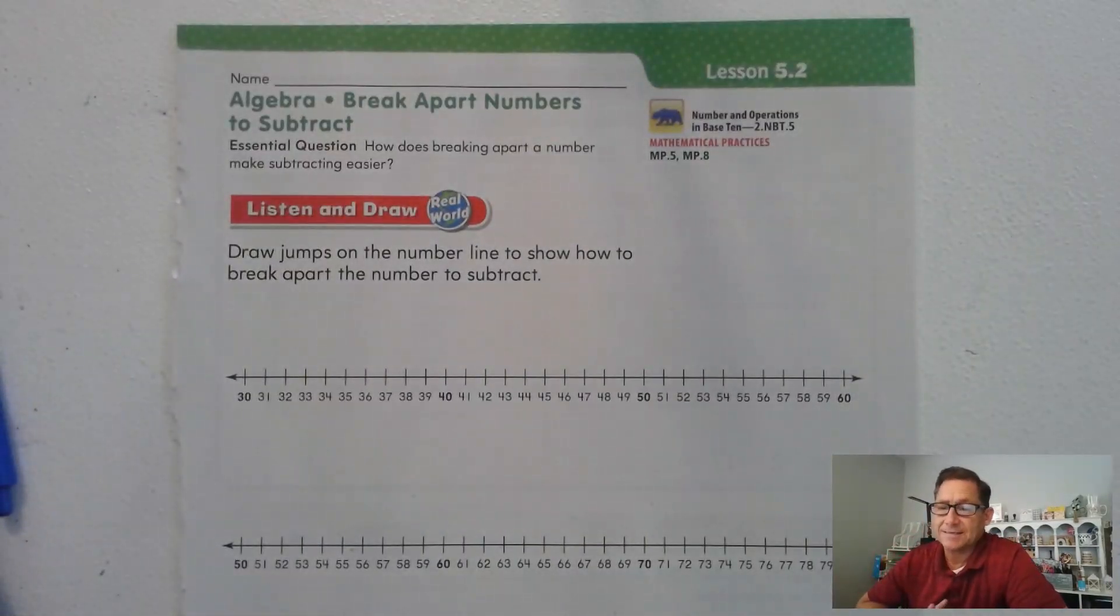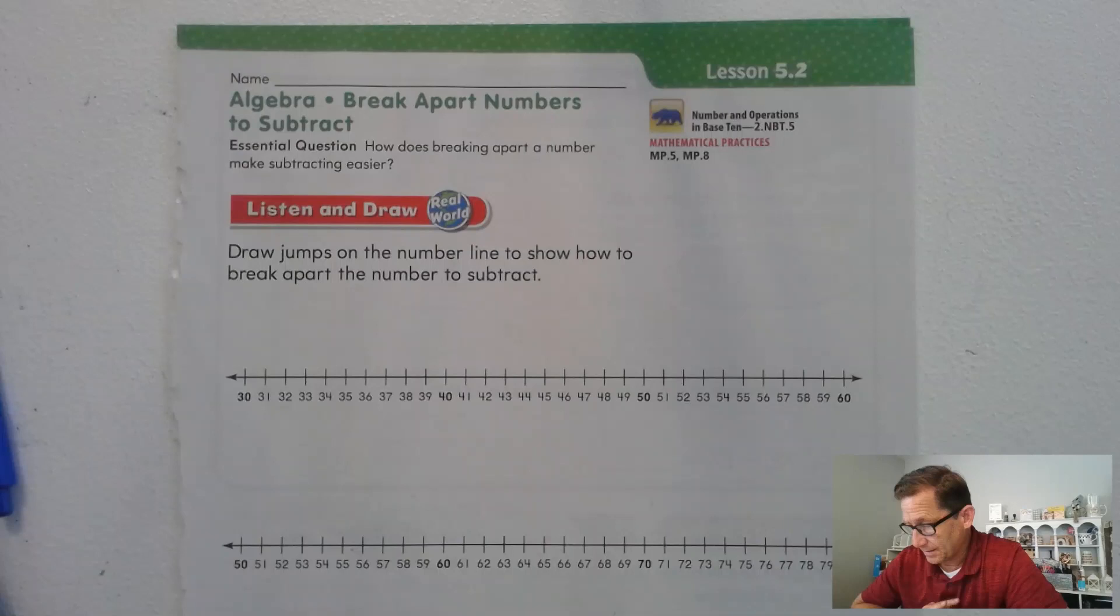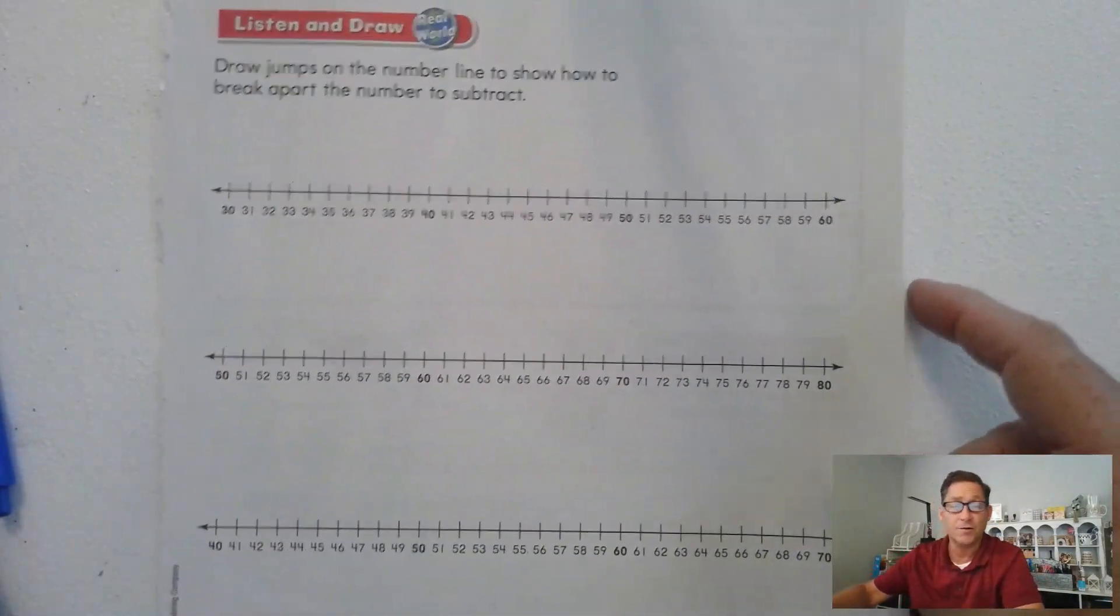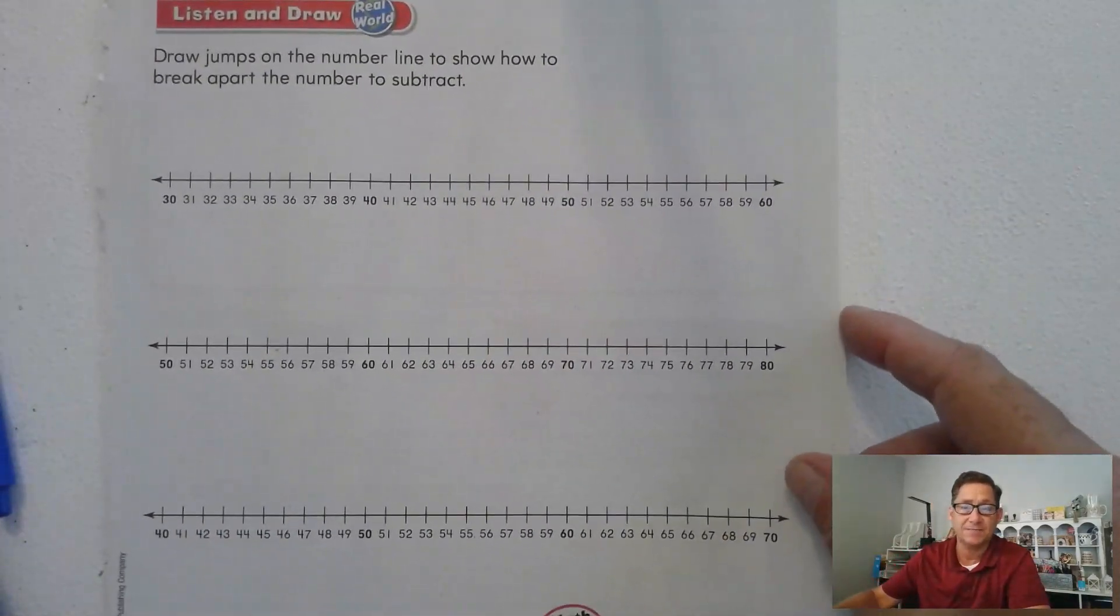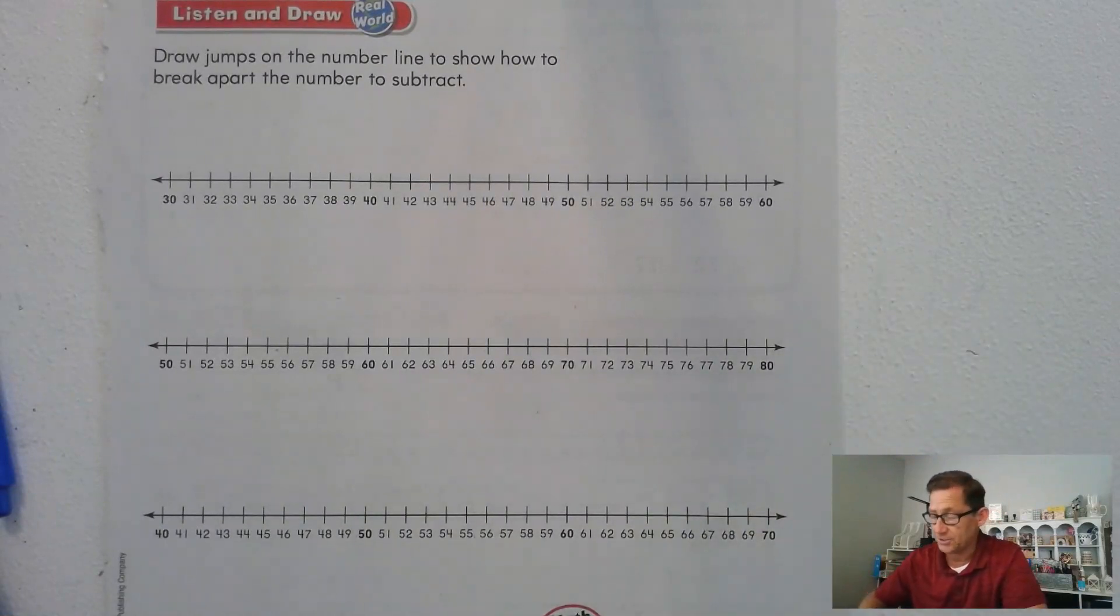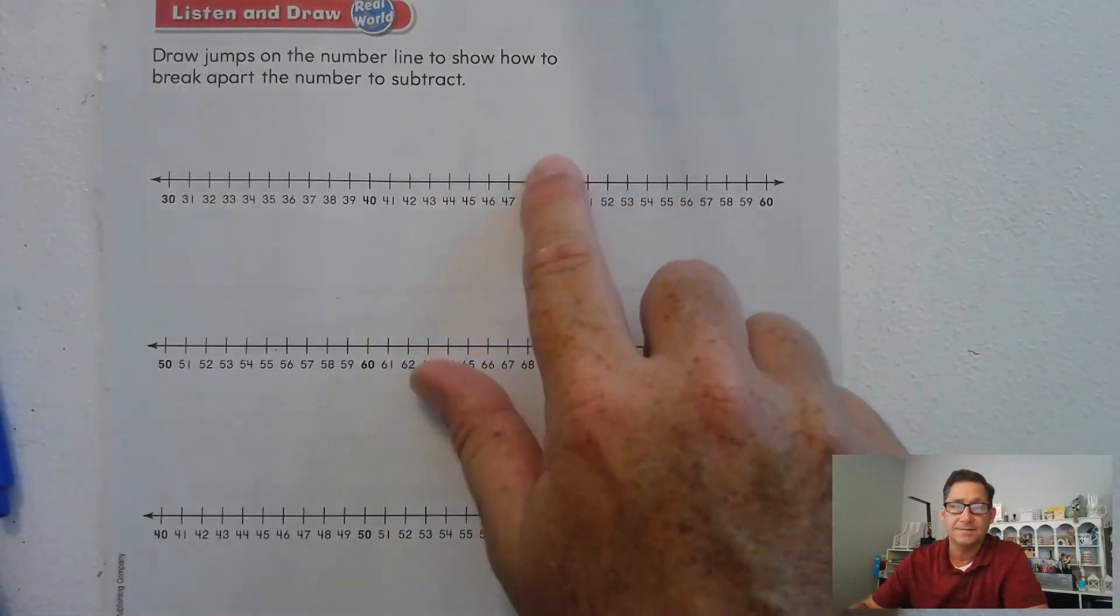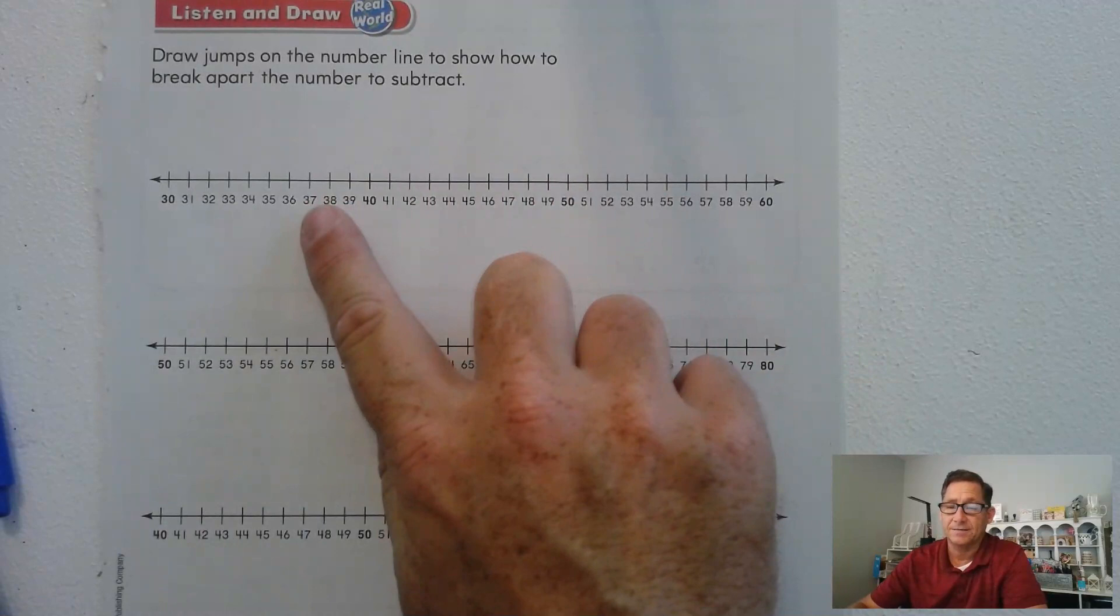You'll recall in the last lesson, we were working on breaking apart single digit numbers so we could make a 10. So keep that in mind as you do today's listen and draw activities. You're going to use these three number lines on page 233 of the second grade GoMath textbook to complete the answers. You're going to draw jumps to subtract the problem.